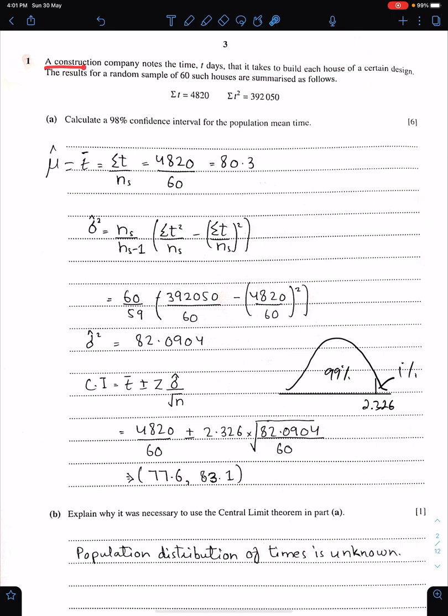Question number 1. A construction company notes the time, T days, that it takes to build each house of a certain design. The results for a random sample of 60 such houses are summarized as follows. Point A: Calculate a 98% confidence interval for the population mean time. To calculate the 98% confidence interval, we first need to find the unbiased estimates of population mean and the population variance. This is the unbiased estimate of population mean. And with the help of this formula, we can easily find the unbiased estimate of population variance, which is 82.0904.